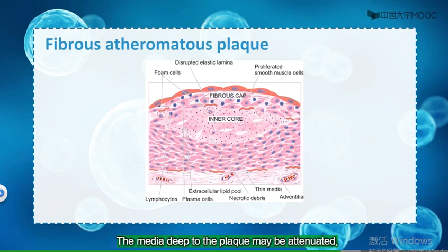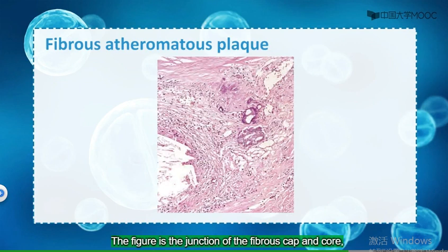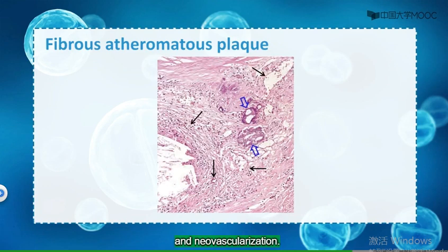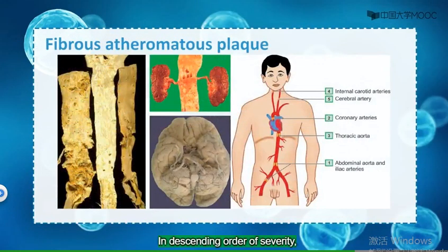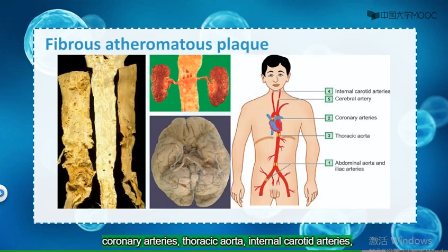The media deep to the plaque may be attenuated and exhibit smooth muscle atrophy and loss. The figure shows the junction of the fibrous cap and core, showing scattered inflammatory cells, calcification, and neovascularization. In descending order of severity, atherosclerosis involves the infrarenal abdominal aorta and iliac aorta, coronary arteries, thoracic aorta, internal carotid arteries, and cerebral arteries, especially the circle of Willis.